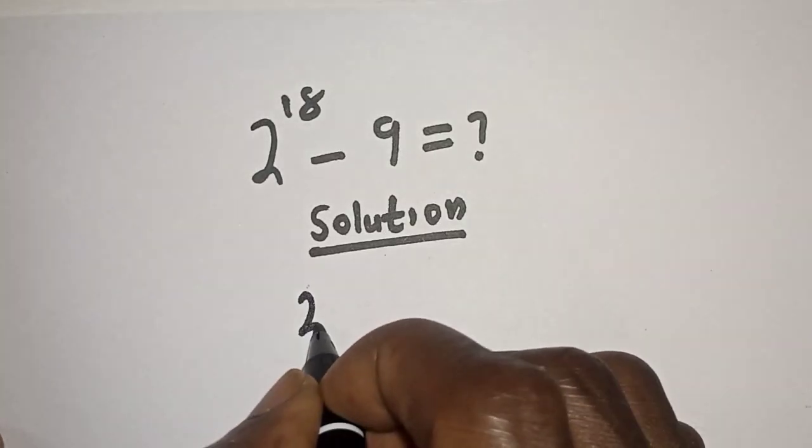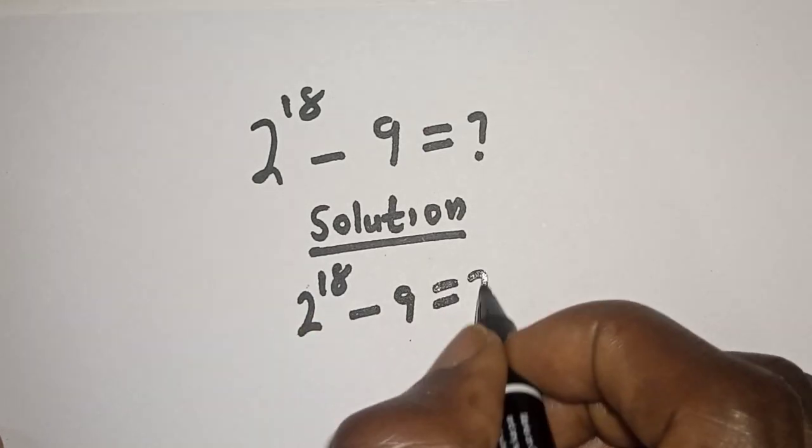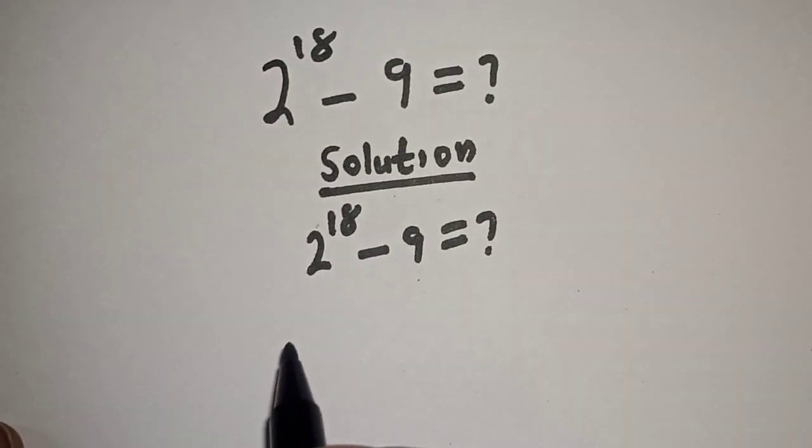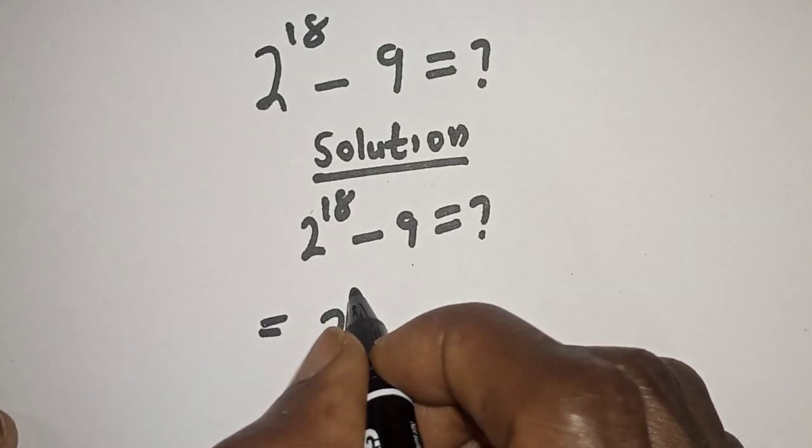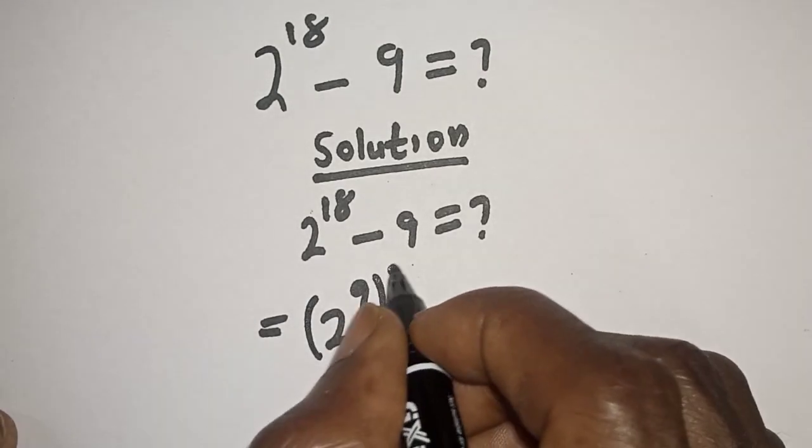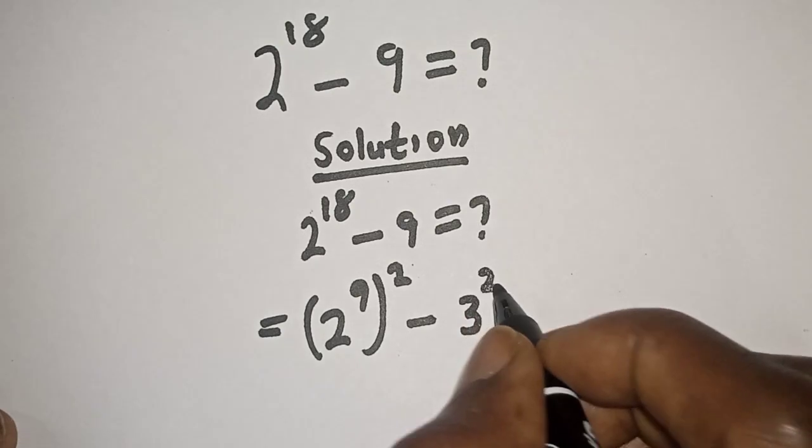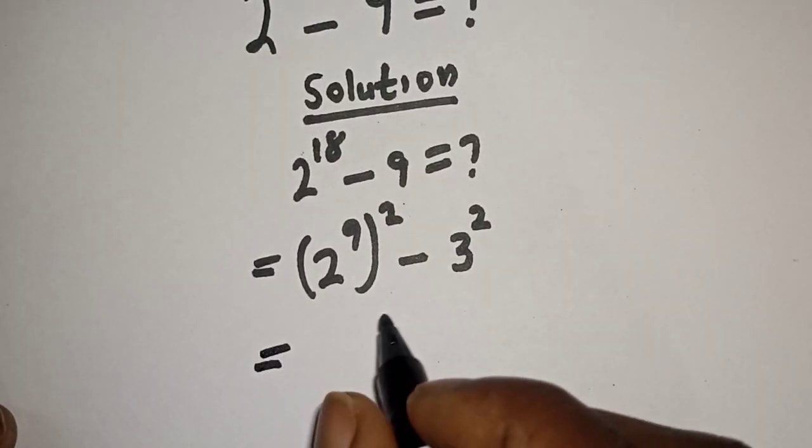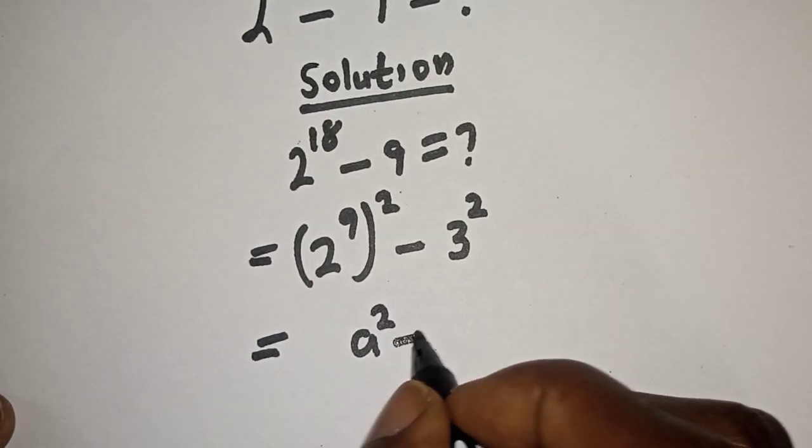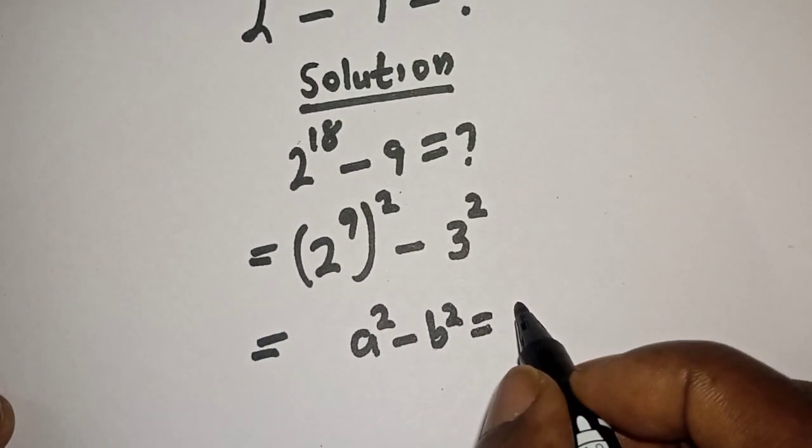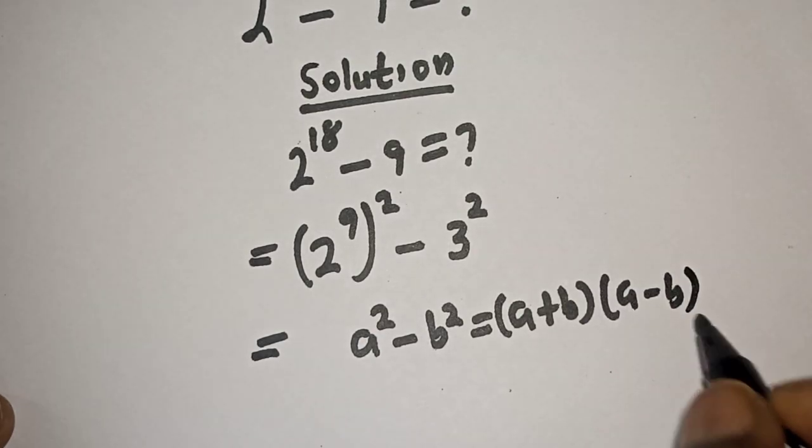Solution. We have the given equation, 2 raised to power 18 minus 9. We don't know the value. So, now, 2 raised to power 18 can be written as 2 raised to power 9 square, minus 9 can be written as 3 square. This is equal to—take note of this rule that if you have a square minus b square,